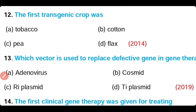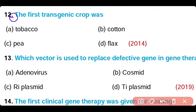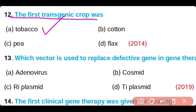Question 12: The first transgenic crop was — tobacco, cotton, pea, or flax? Option A is correct. The first transgenic crop was tobacco. It was discovered in 1982.